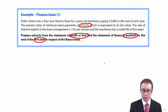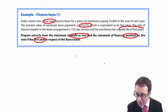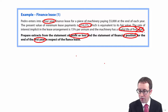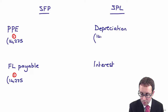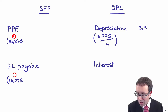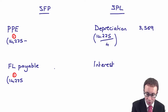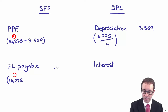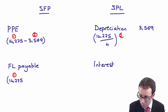Step two is to depreciate the asset. We depreciate over the shorter of the lease term and the useful life. The lease term here is four years and the useful life is five years, so we use four years — that's the shorter. Depreciation is $14,275 divided by 4 years, giving $3,569. We debit the depreciation expense with $3,569 and credit the accumulated depreciation on property, plant and equipment.